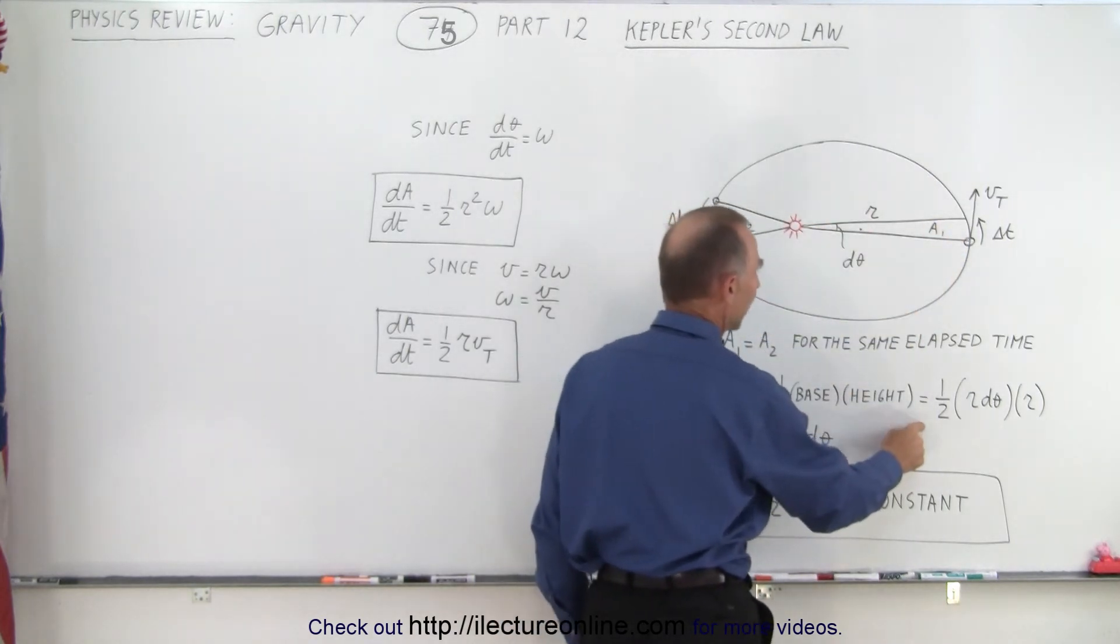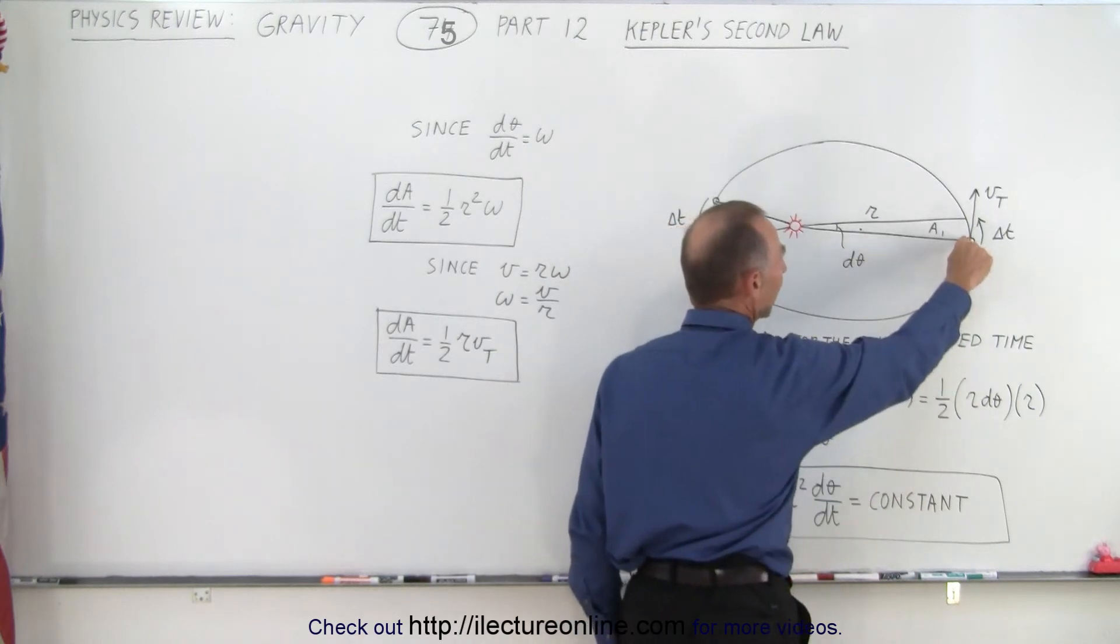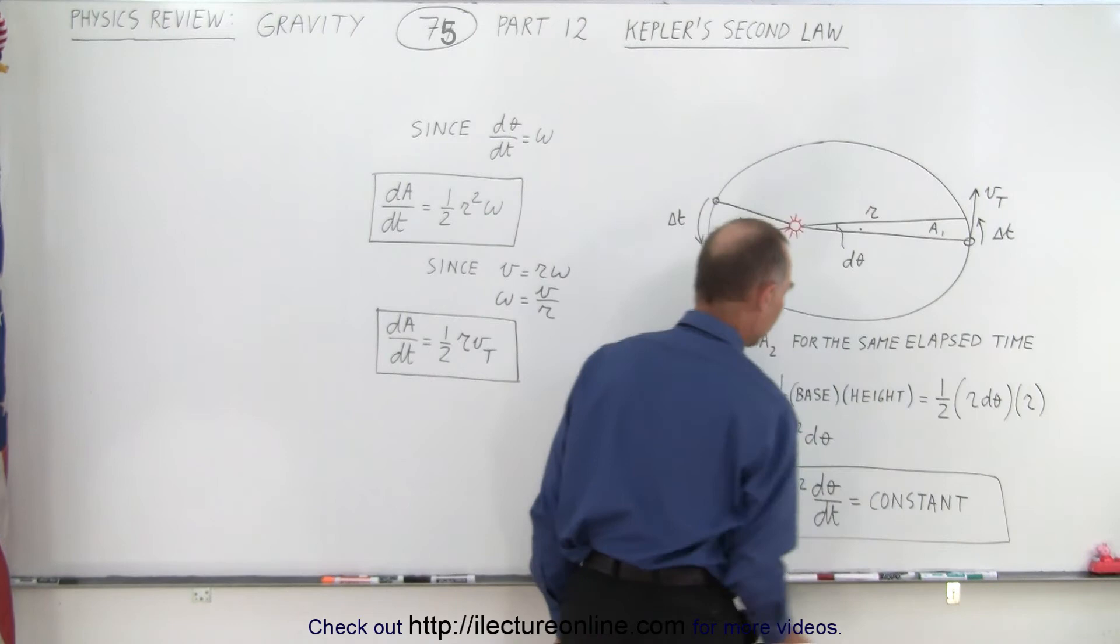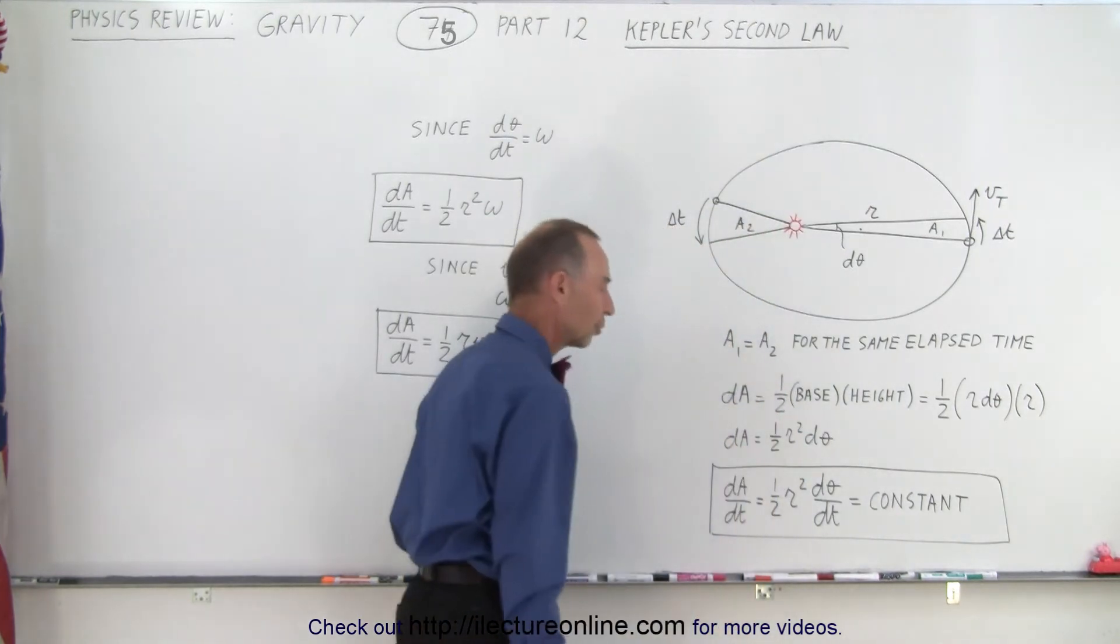And so it's one half the base which is r times dθ, that's a small angle right here, dθ times r, or dA equals one half r squared dθ.